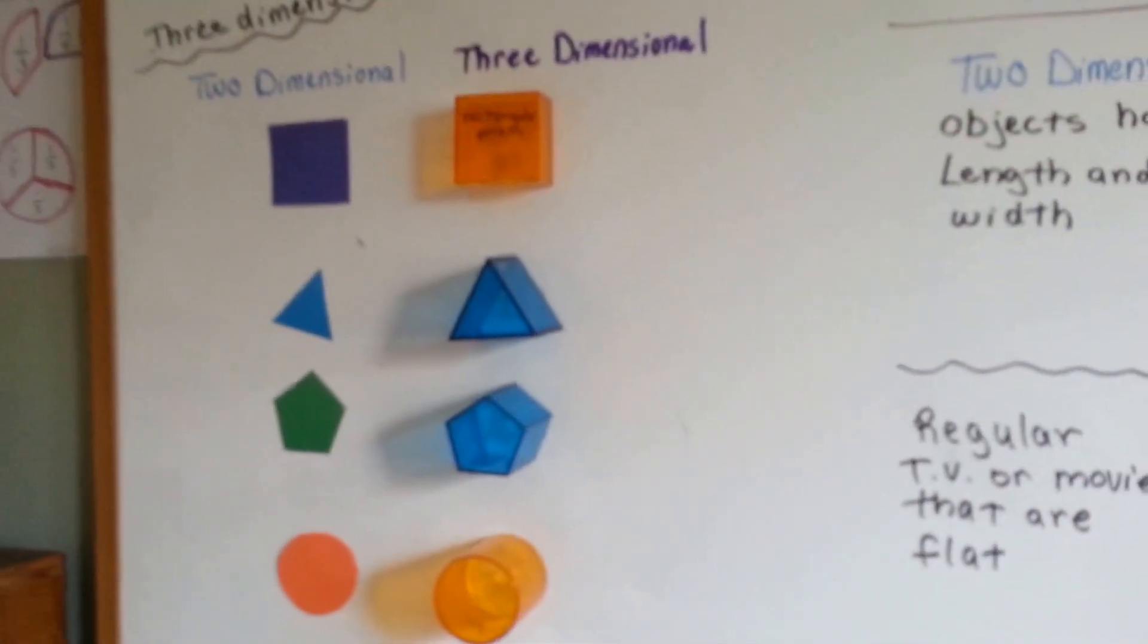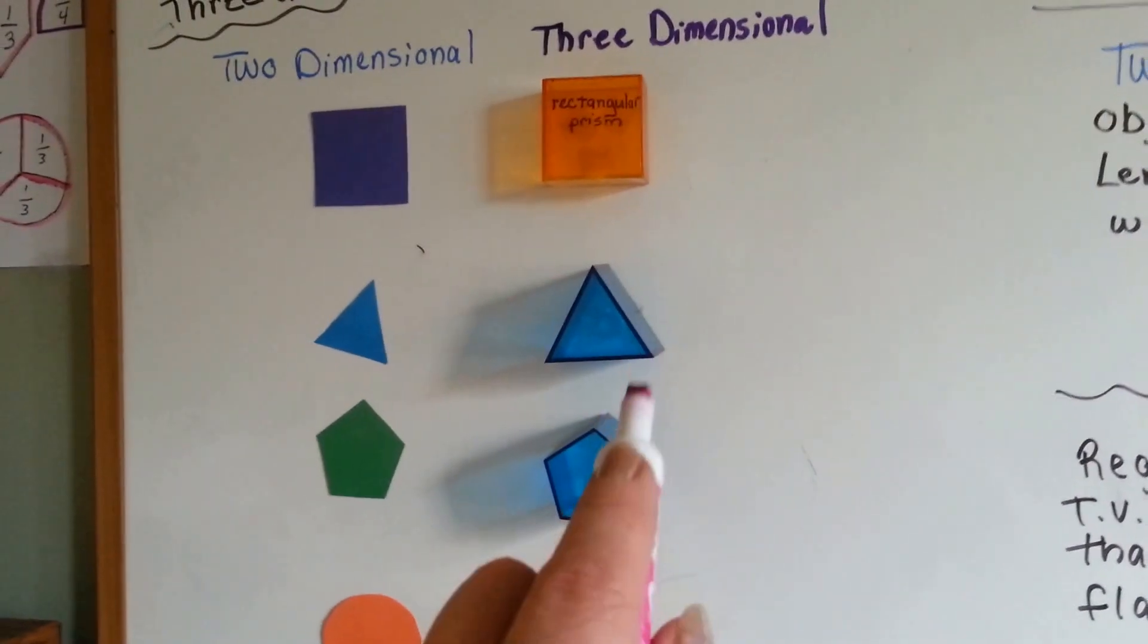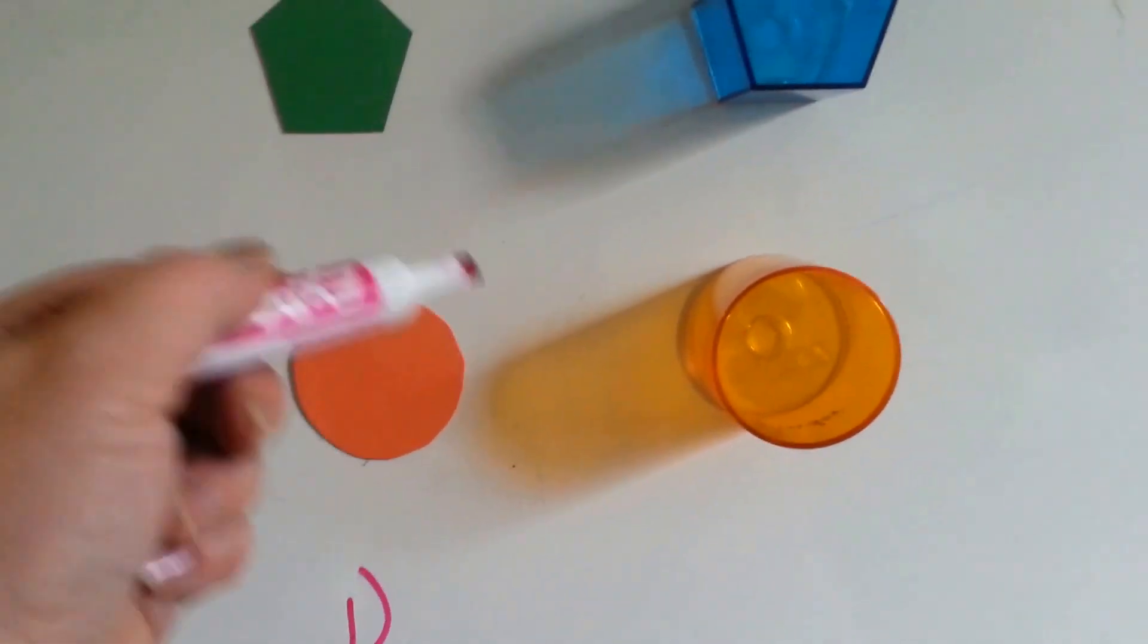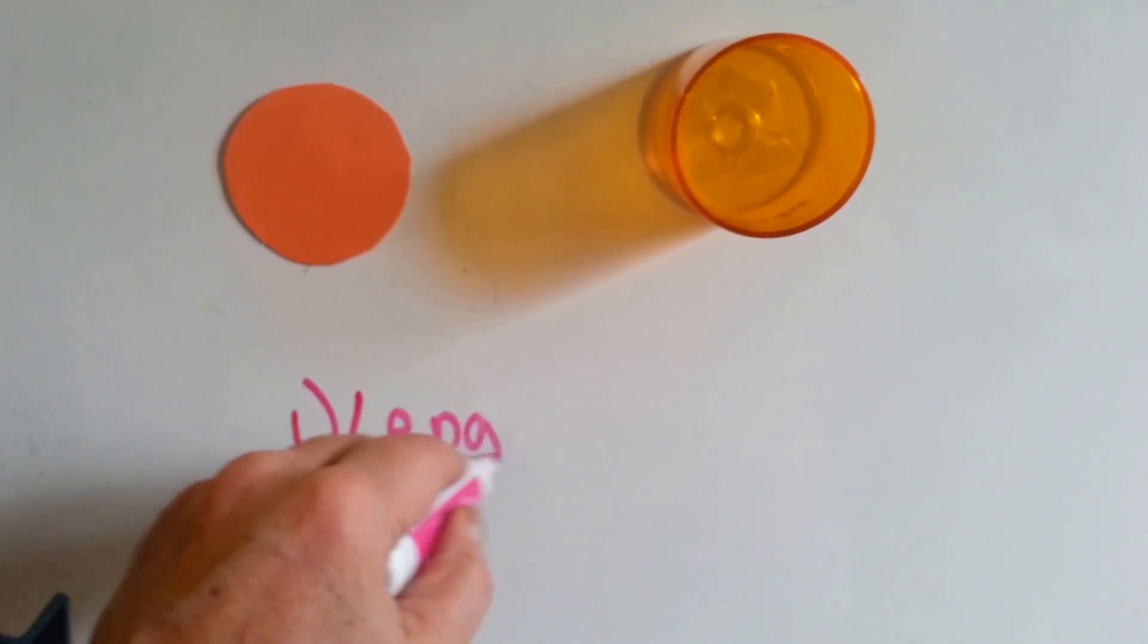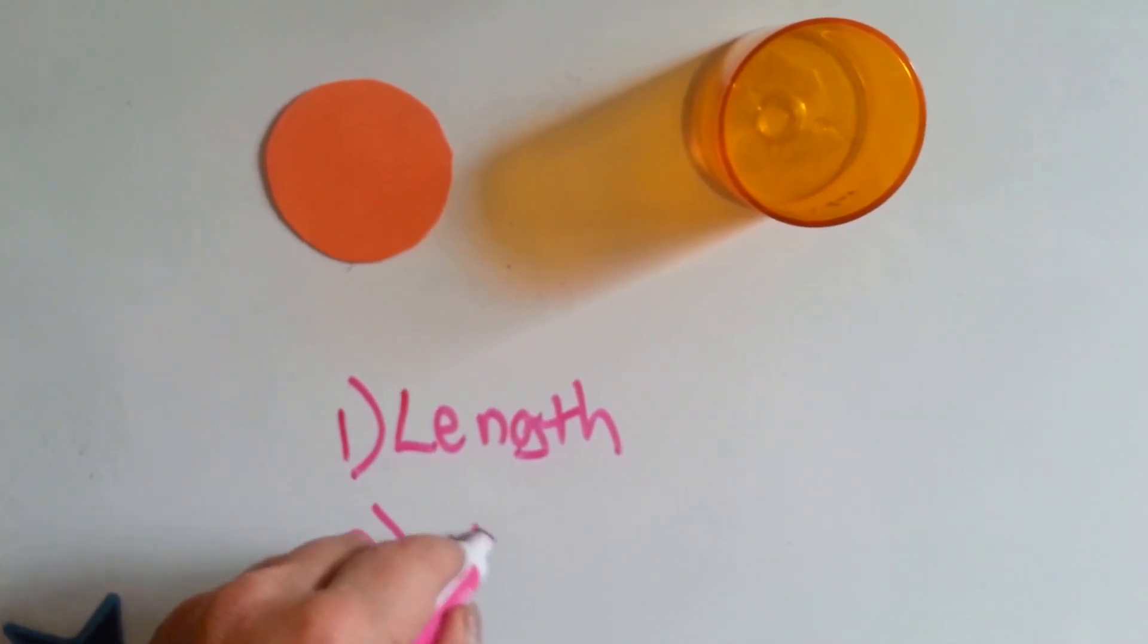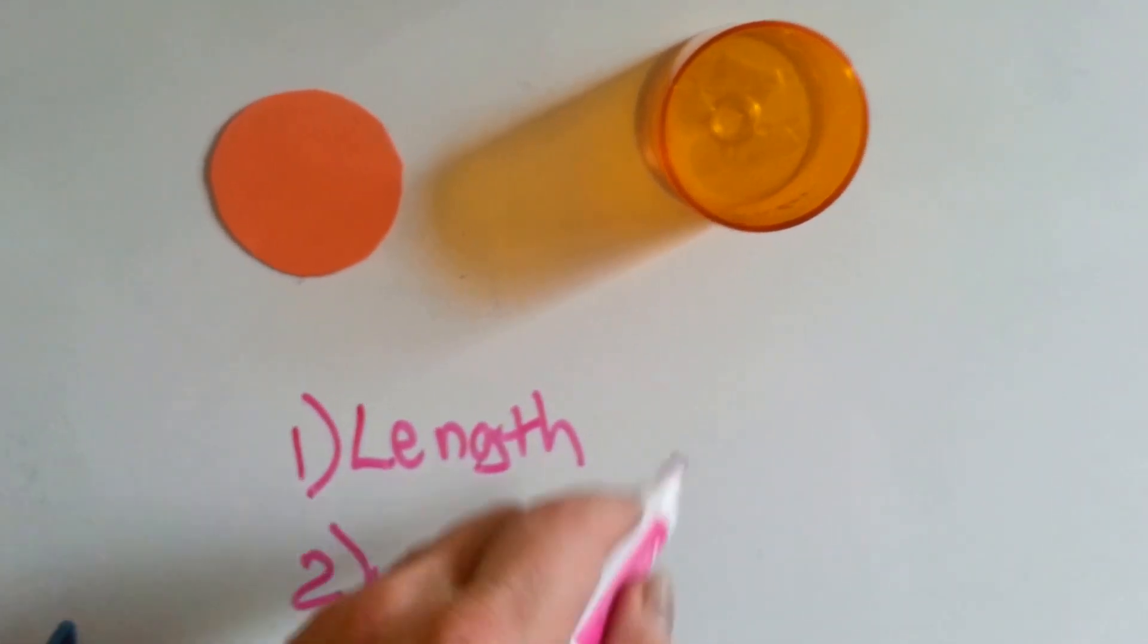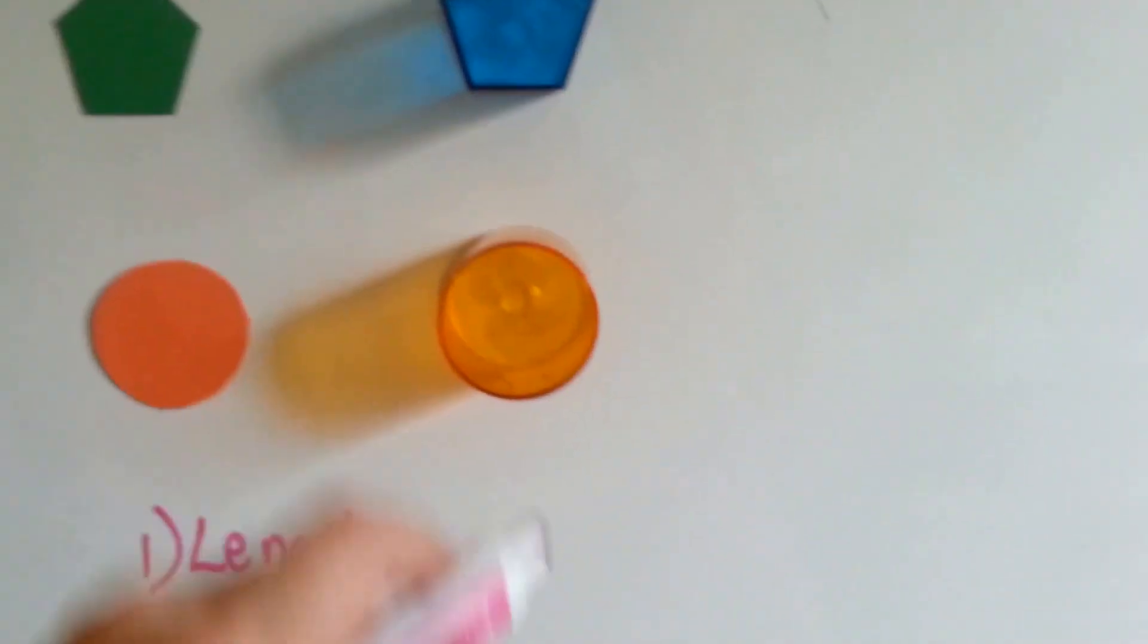So, the difference between two-dimensional and three-dimensional is this one has an added extra dimension, the parts of the shape. The first dimension would be length. The second dimension would be width. But the third dimension that this group of objects have is height.